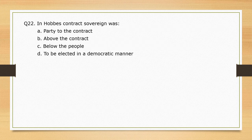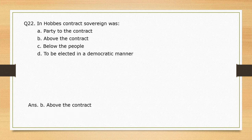In Hobbes' contract, the sovereign was — options: party to the contract; above the contract; below the people; to be elected in a democratic manner. The correct option is option B: above the contract.